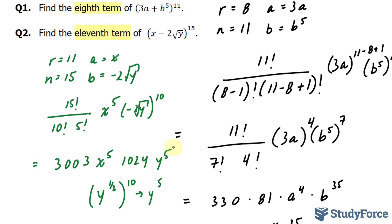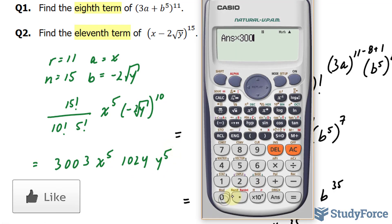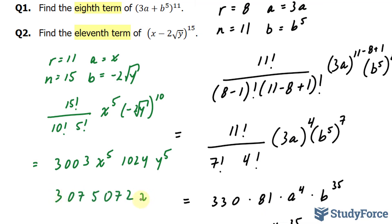Therefore, our final answer is this number times that number, giving us 3,075,072 xy to the power of 5.